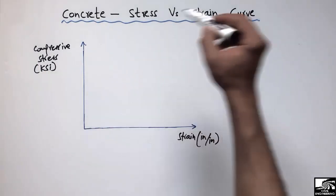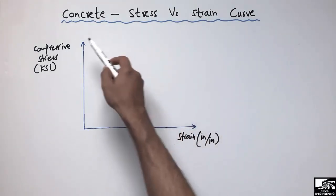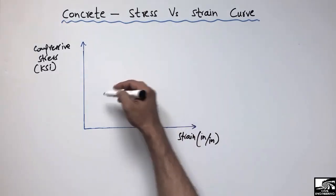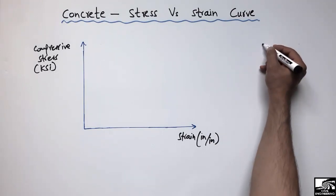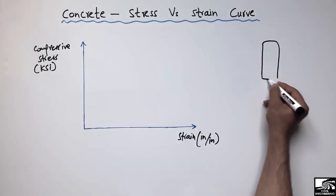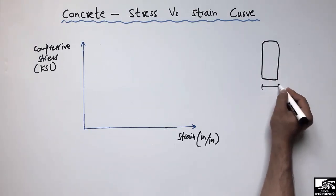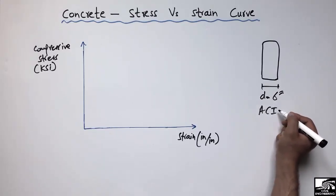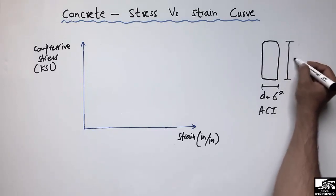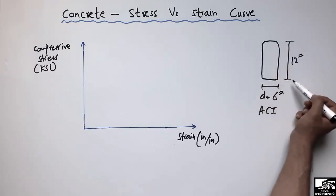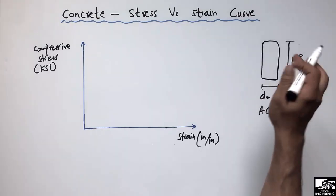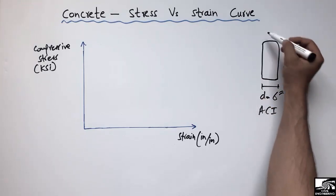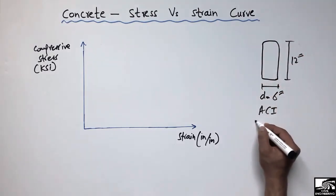To draw the stress-strain curve for concrete, we perform a test on a cylinder. We make a concrete cylinder with a diameter of 6 inches, according to the ACI (American Concrete Institute), and a height of 12 inches. We prepare this cylinder of concrete and put it for 28 days of curing so it gains enough strength.